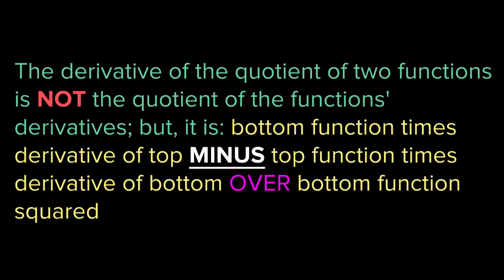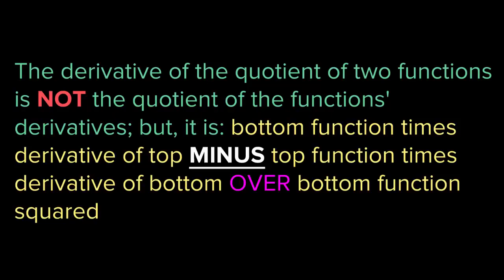The derivative of the quotient of two functions is not the quotient of the functions' derivatives. So if you have a function on top and a function on bottom, you don't simply take the derivative of the top function and the derivative of the bottom function and divide them. The rule is: the bottom function times the derivative of the top function, minus the top function times the derivative of the bottom function, over the bottom function squared.